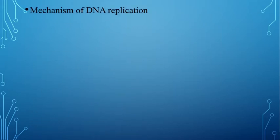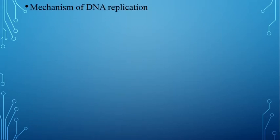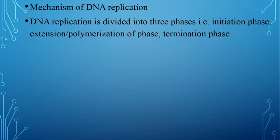Bismillahirrahmanirrahim. I am Fareed Marwat. The topic is mechanism of DNA replication. DNA replication means when one DNA divides and produces two daughter DNAs, it is called DNA replication. DNA replication is a continuous process, but for convenience we have divided it into three phases: initiation phase, extension or polymerization phase, and termination phase.